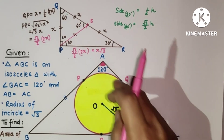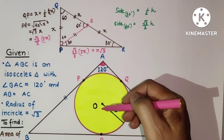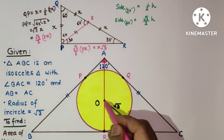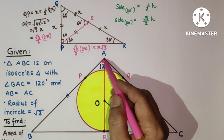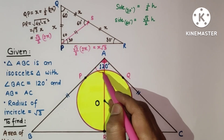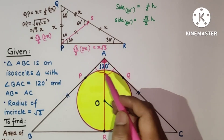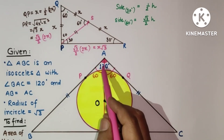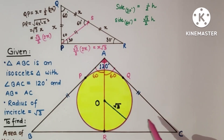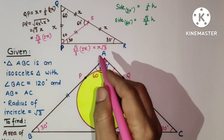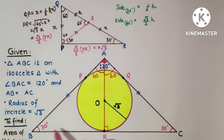Now join AO and extend it — it will pass through R, the point of contact, since O is the incenter. When we join from the vertex to the incenter, the angle is bisected. This angle was 120 degrees, so each half is 60 degrees. Since the two sides are equal, this angle is 30 degrees and this angle is 30 degrees, and this angle is 90 degrees.